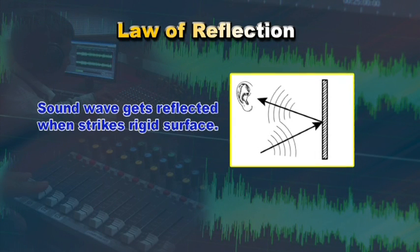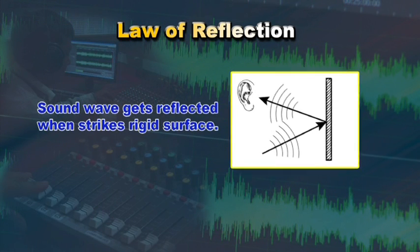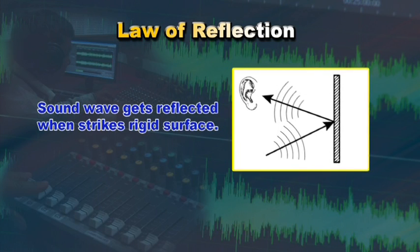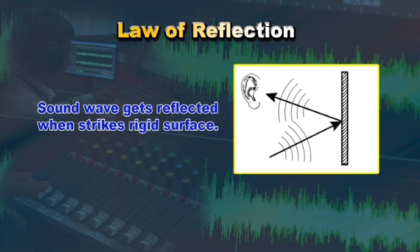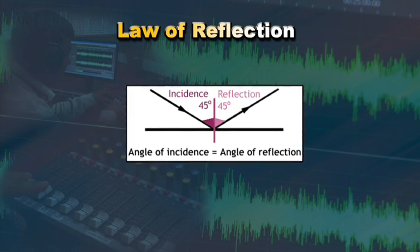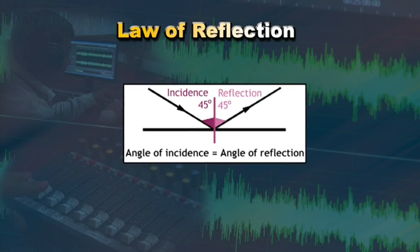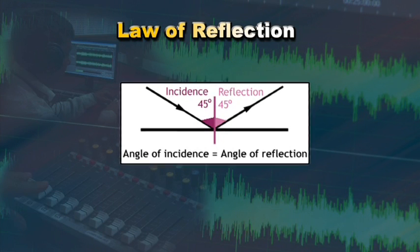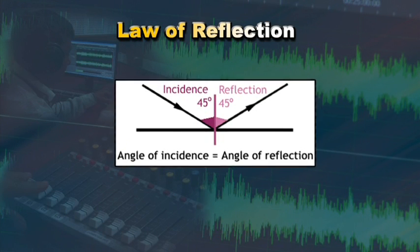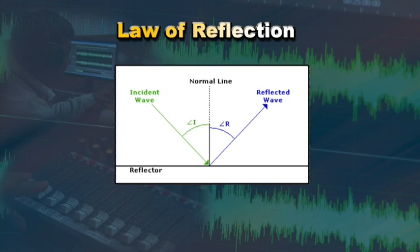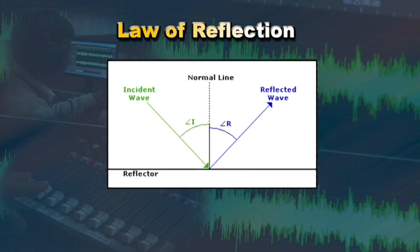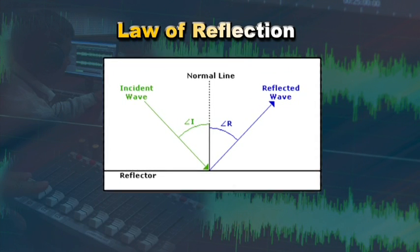The law of reflection means that whenever a sound wave strikes a rigid surface, it gets reflected. The angle of reflection is equal to the angle of incidence of the sound wave, the angle being measured from the normal to the surface at the point of impact.